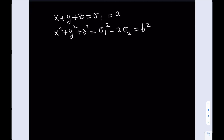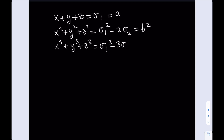The third equation — x cubed plus y cubed plus z cubed — can be written as sigma 1 cubed minus 3 times sigma 1 times sigma 2 plus 3 times sigma 3. If you cube x plus y plus z and do some factoring, you're going to notice that this actually works. And this is equal to A cubed.